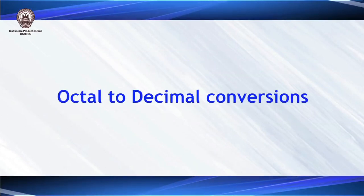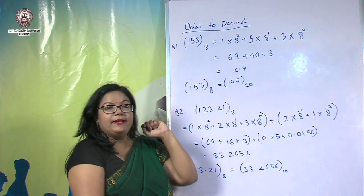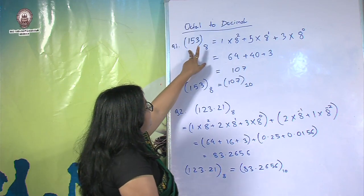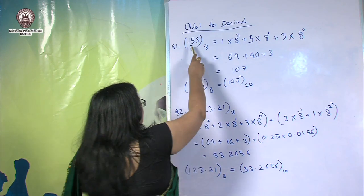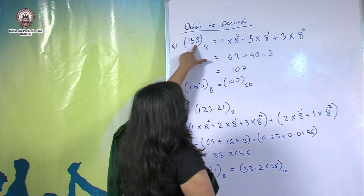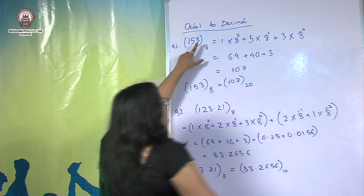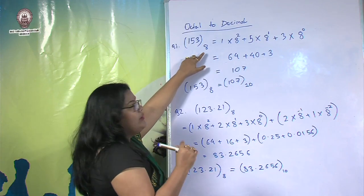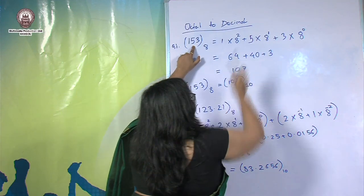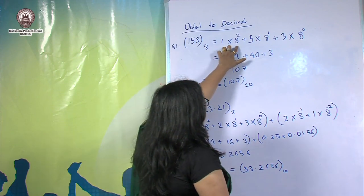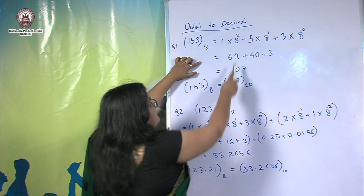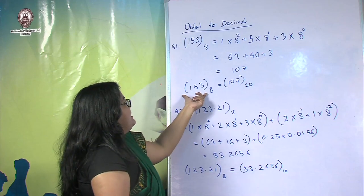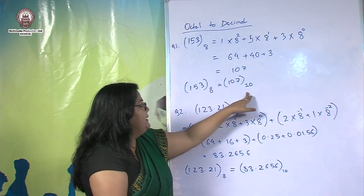Now let us look at octal to decimal conversion. We have the octal number 153. To convert it, we multiply each digit by its weighted power of 8, since the base is 8. So 3 × 8⁰ + 5 × 8¹ + 1 × 8² = 3 + 40 + 64 = 107. The decimal equivalent of the octal number 153 is 107.